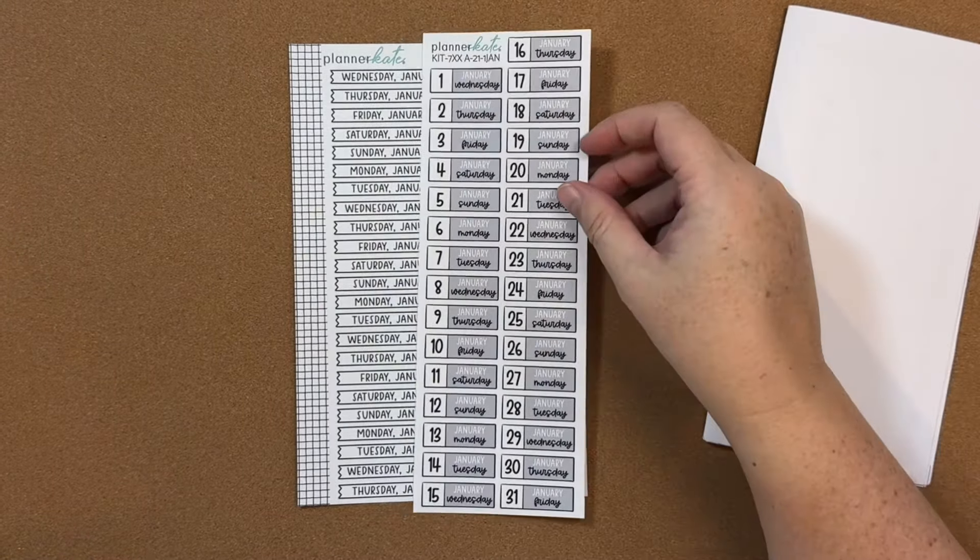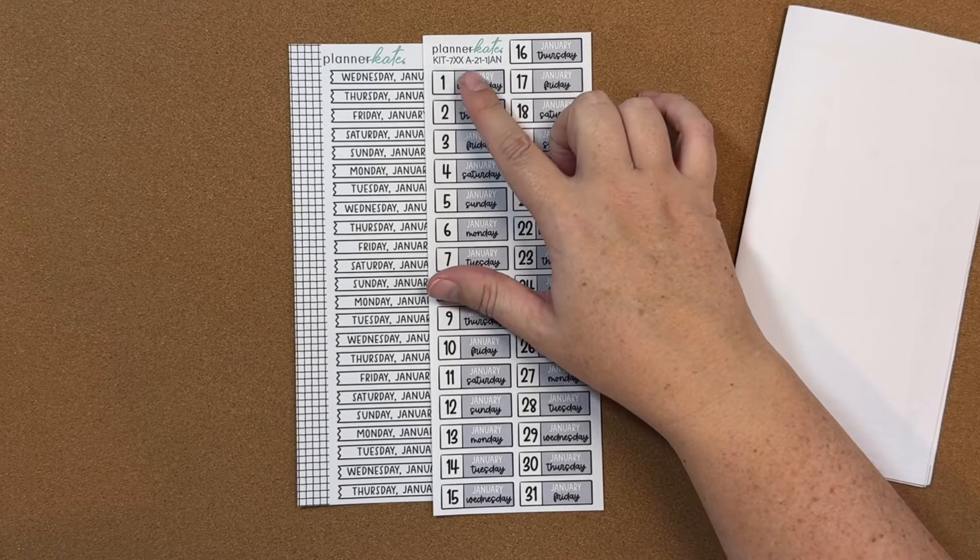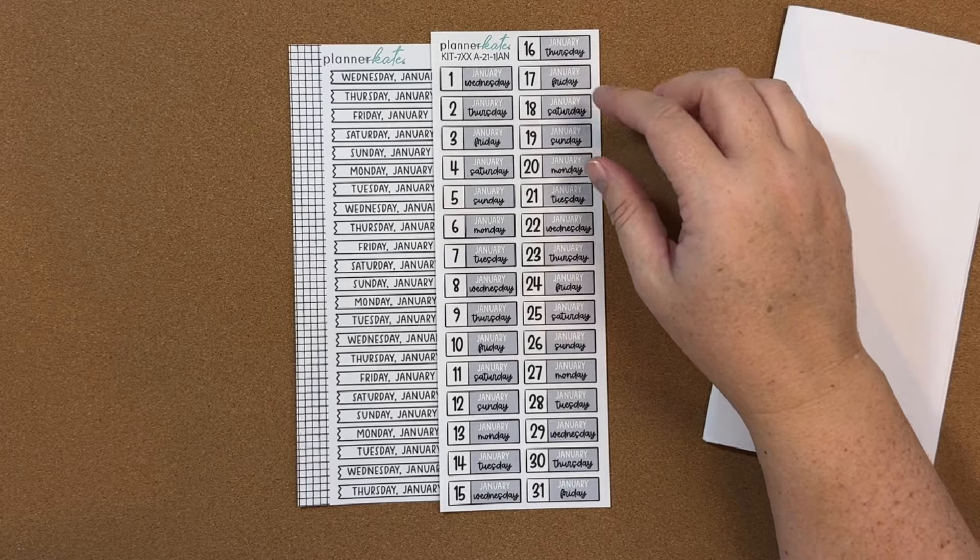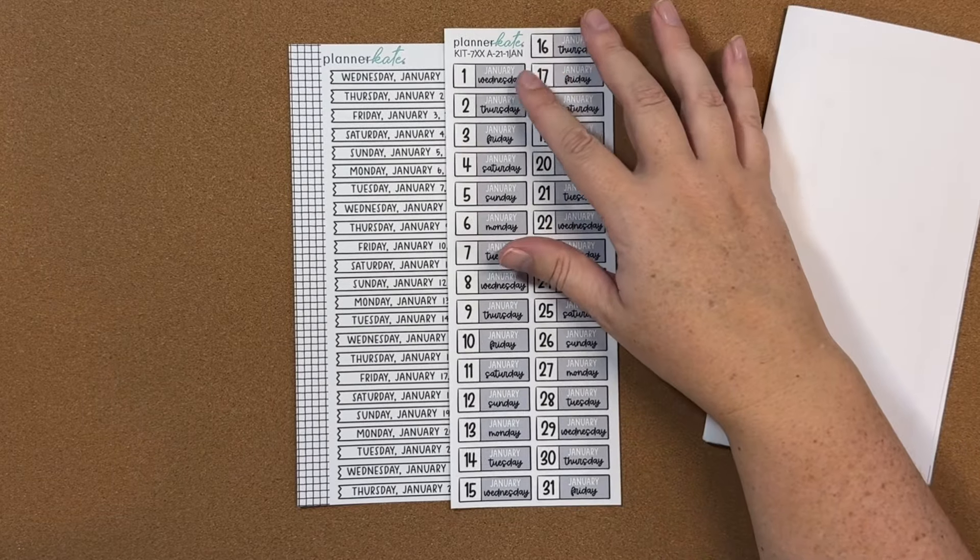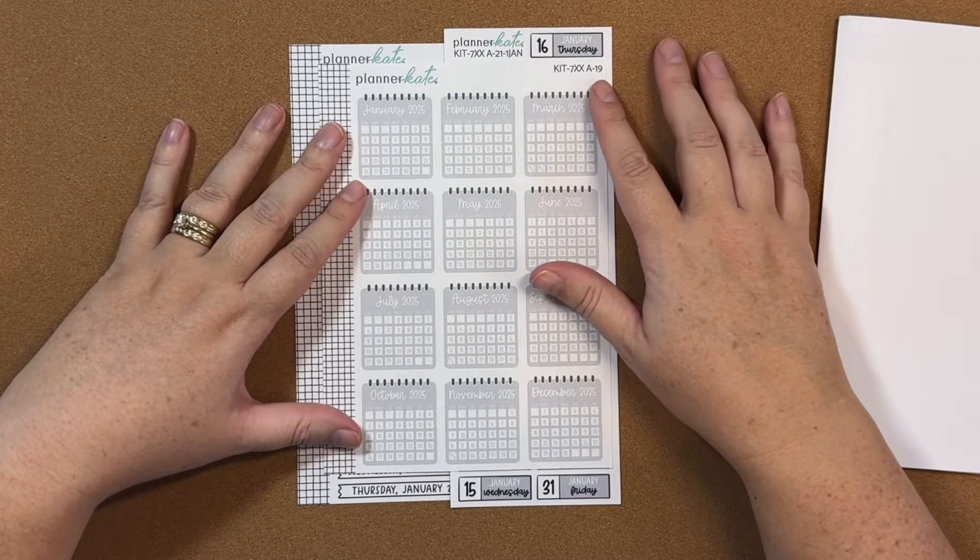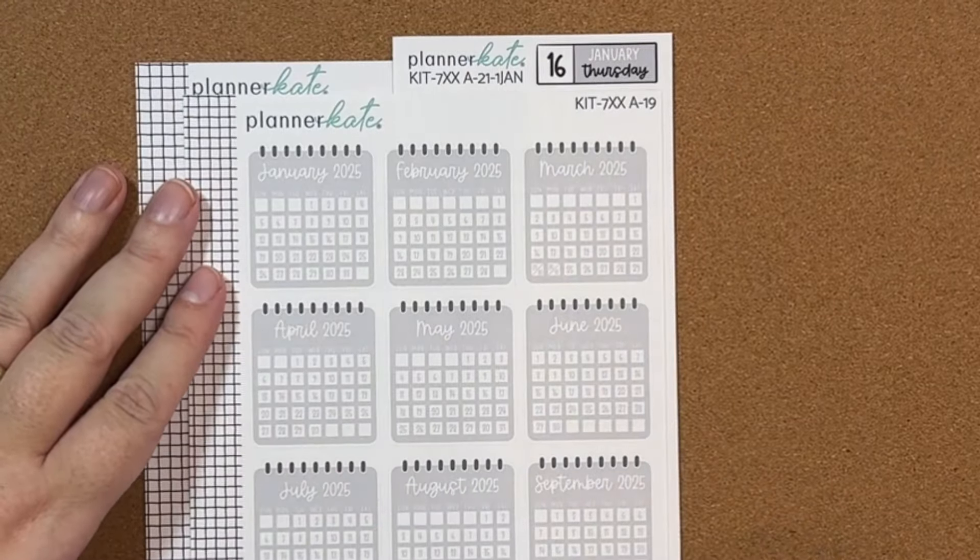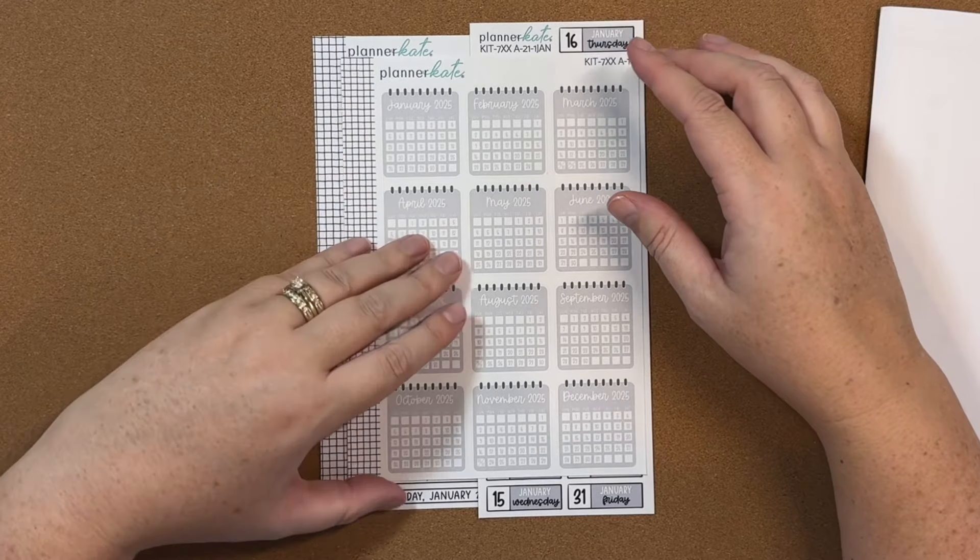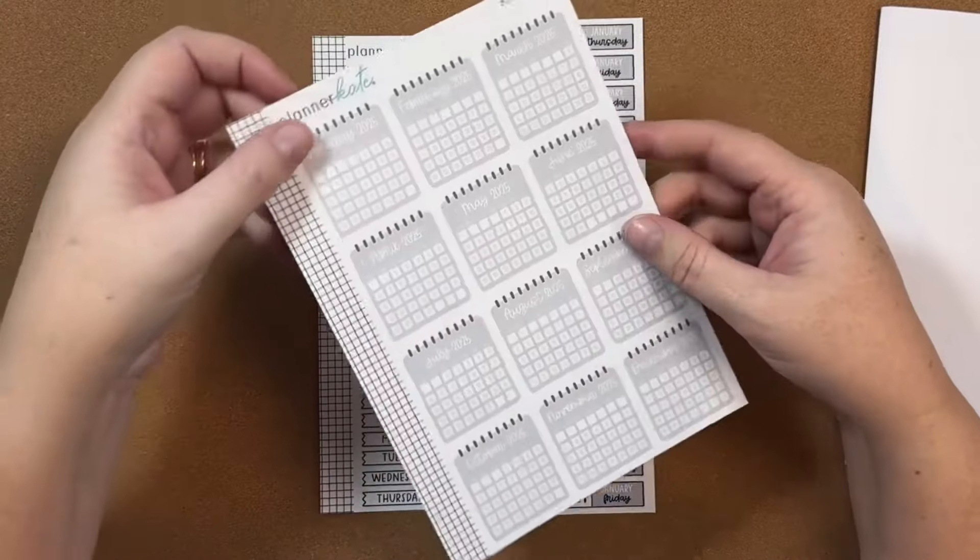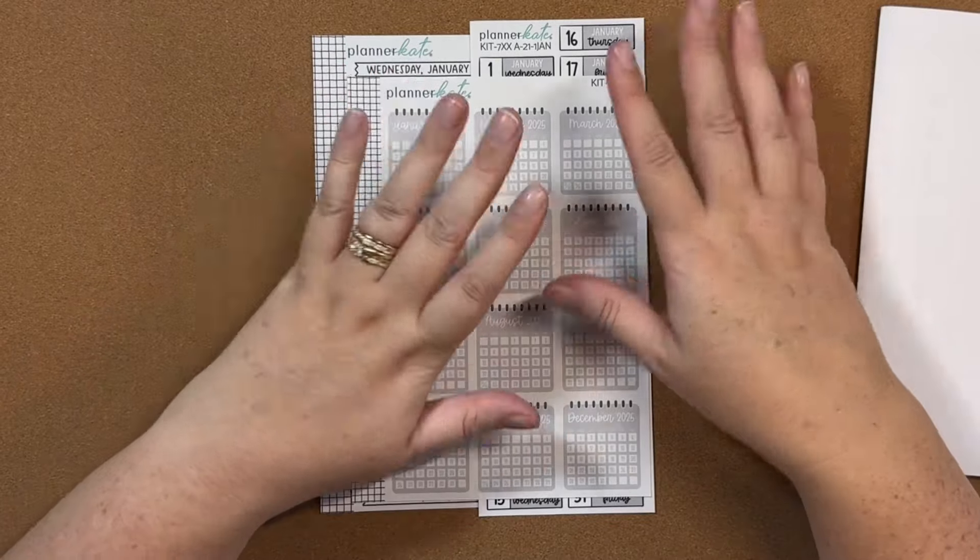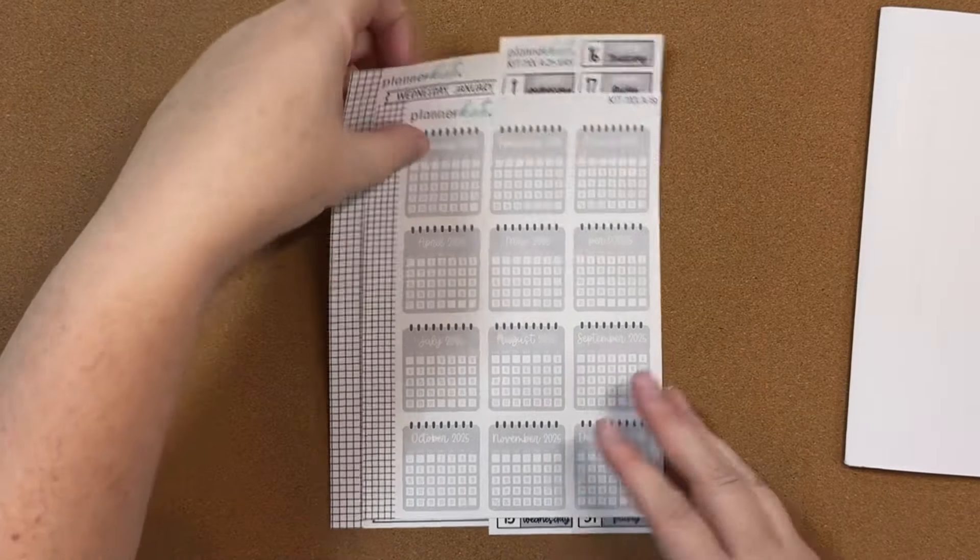And then another option is 7XXA21, so another way you could date your planner that has the date, the month, and the day of the week. And then this one is kit 7XXA19, and you get all 12 months on here. These are mini calendars for 2025. I love that they're neutral and it does have the dates on the calendar. So a little sneak peek of what's coming from Planner Kate for 2025.